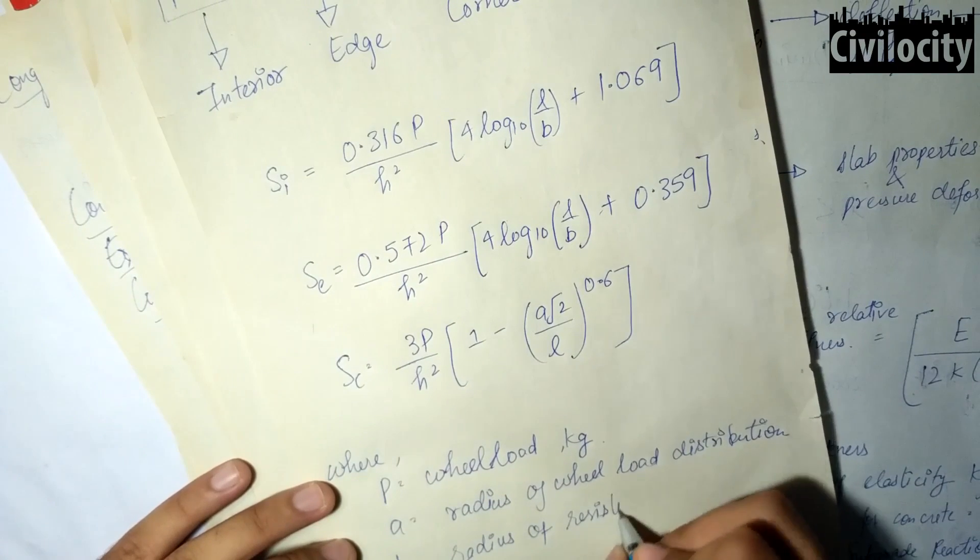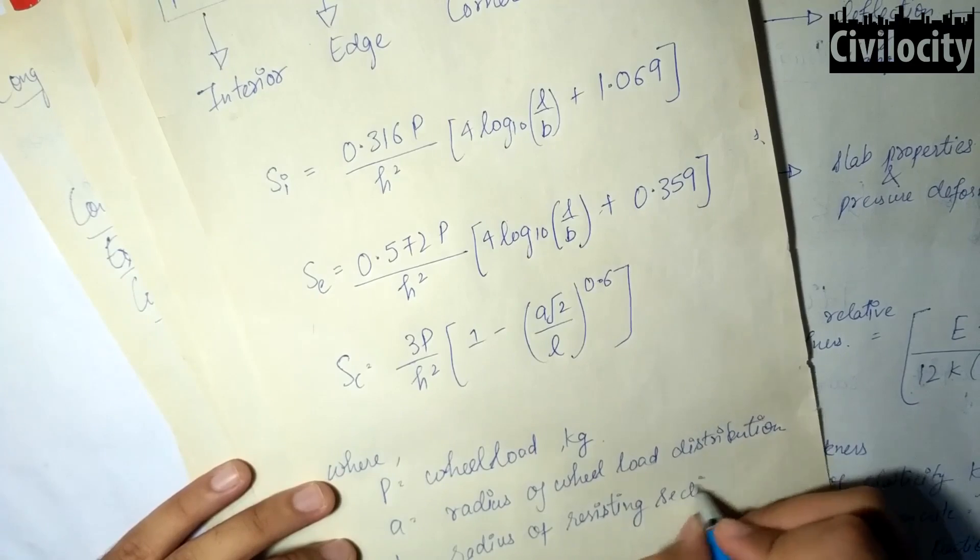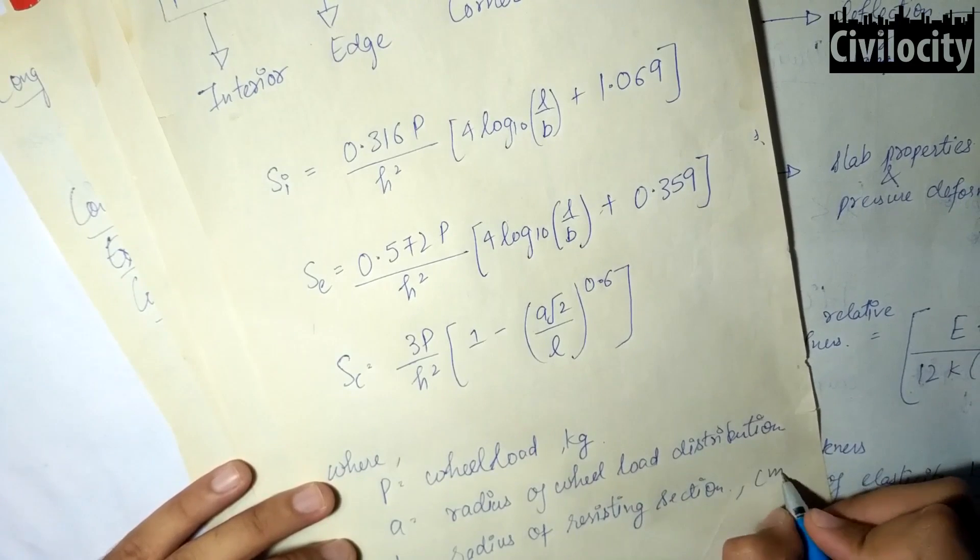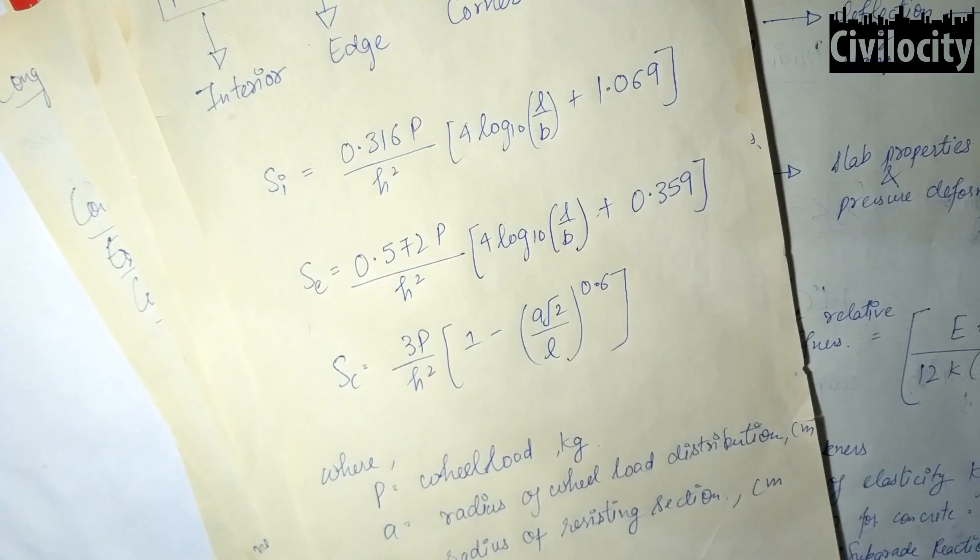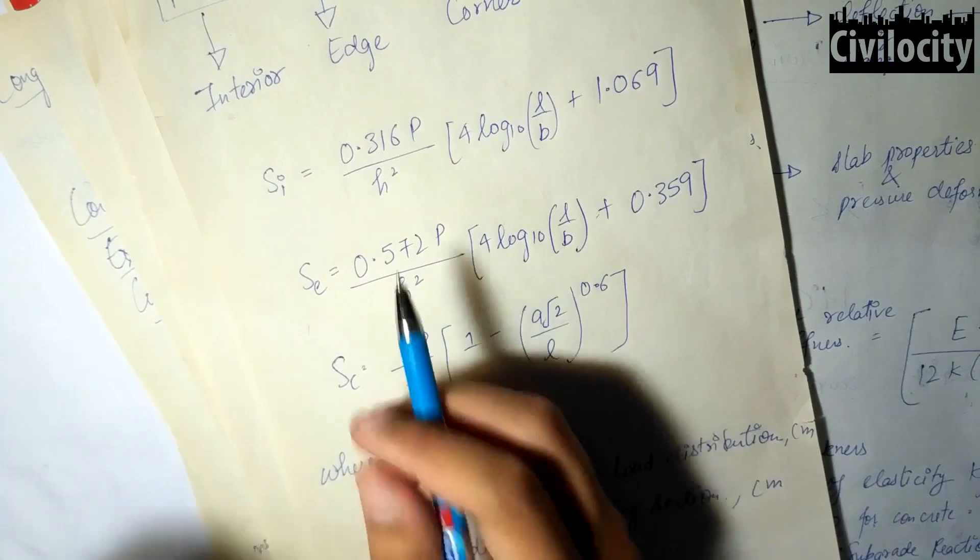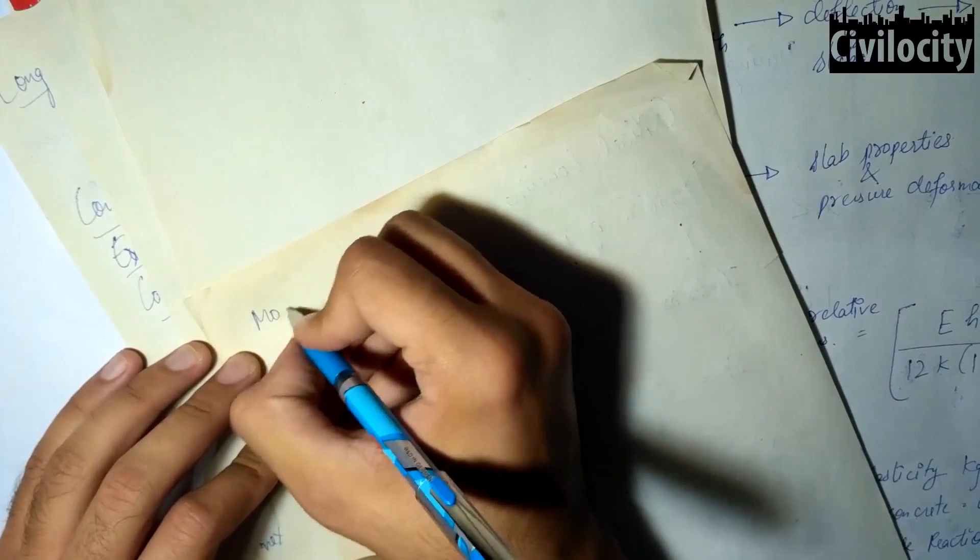Where H is the slab thickness, P is the wheel load, A is the radius of the wheel load distribution, L is the relative stiffness, and B is the radius of resisting section in centimeter.